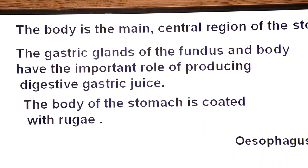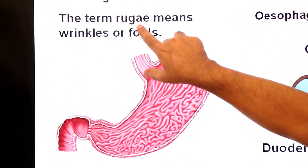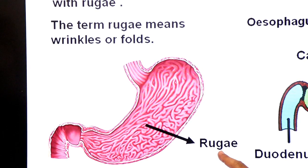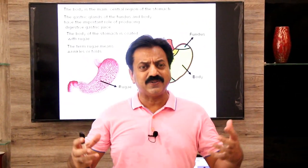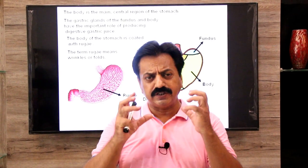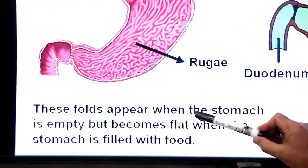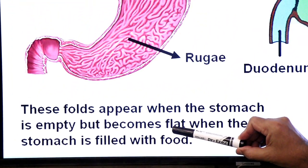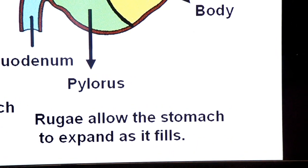The body of the stomach is coated with rugae. The term rugae means wrinkles or folds. These are folds in the wall of the stomach — they appear when the stomach is empty but become flat when the stomach is filled with food. Rugae allow the stomach to expand as it fills.